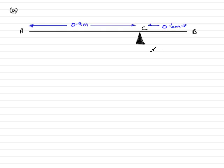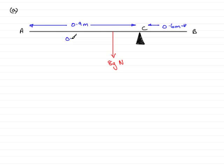We need a few forces acting on this. It's a uniform rod, so its weight must act in the middle. The rod has a mass of 8 kilograms, so there's the weight of 8g newtons acting downwards at the center. The distance from A to the center must be half of 1.5, so that's 0.75 meters. That also means the distance from where the weight acts to the support is 0.15 meters.